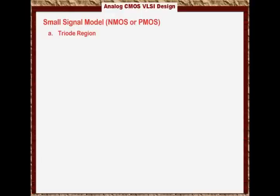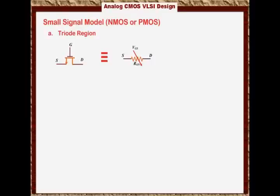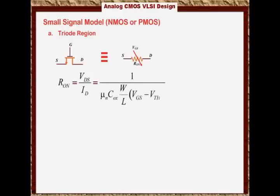The first region is the triode region. If the transistor is on and it is in the triode region, and you have a small signal existing in the circuit, then this transistor will be replaced by the variable resistance R_on. As you see in the diagram, the transistor is replaced by that variable resistance R_on, where R_on equals 1 over μ_N C_OX (W/L) times the absolute value of V_GS minus the threshold voltage.